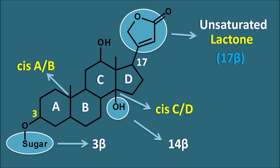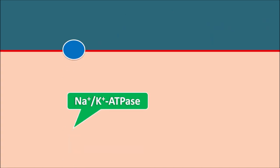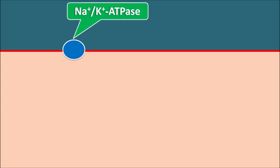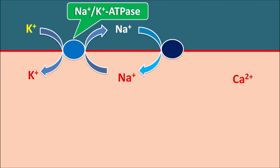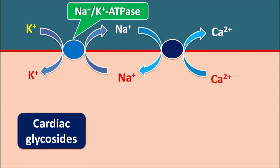Now let us see how these cardiac glycosides act. One important target on the cardiac membrane is the sodium-potassium ATPase pump. This pump works such that after depolarization, sodium entering the cardiac membrane is pumped out while potassium comes inside. There is also a sodium-calcium exchange pump on the cardiac membrane, which brings sodium from outside to inside while pumping calcium out. The net result is sodium going outside and potassium coming inside.